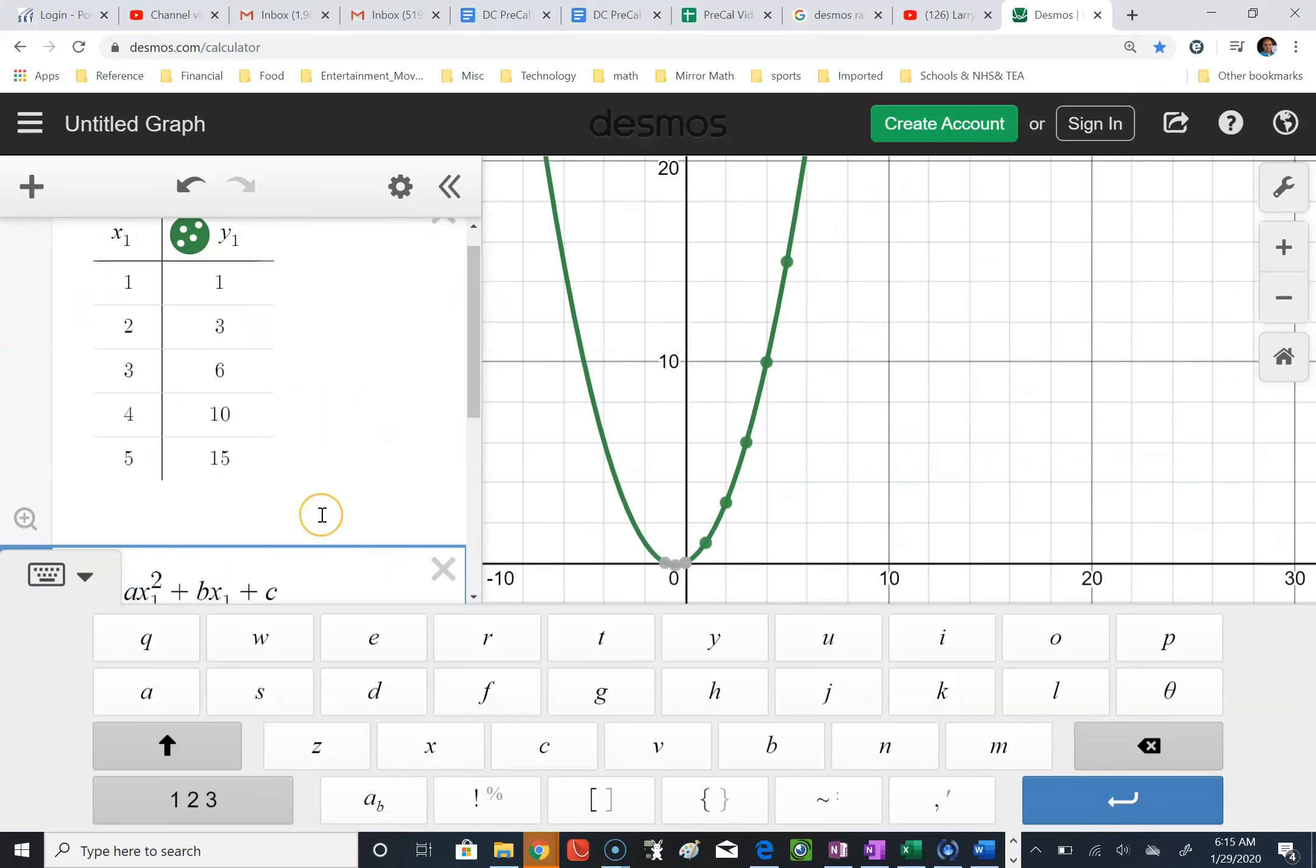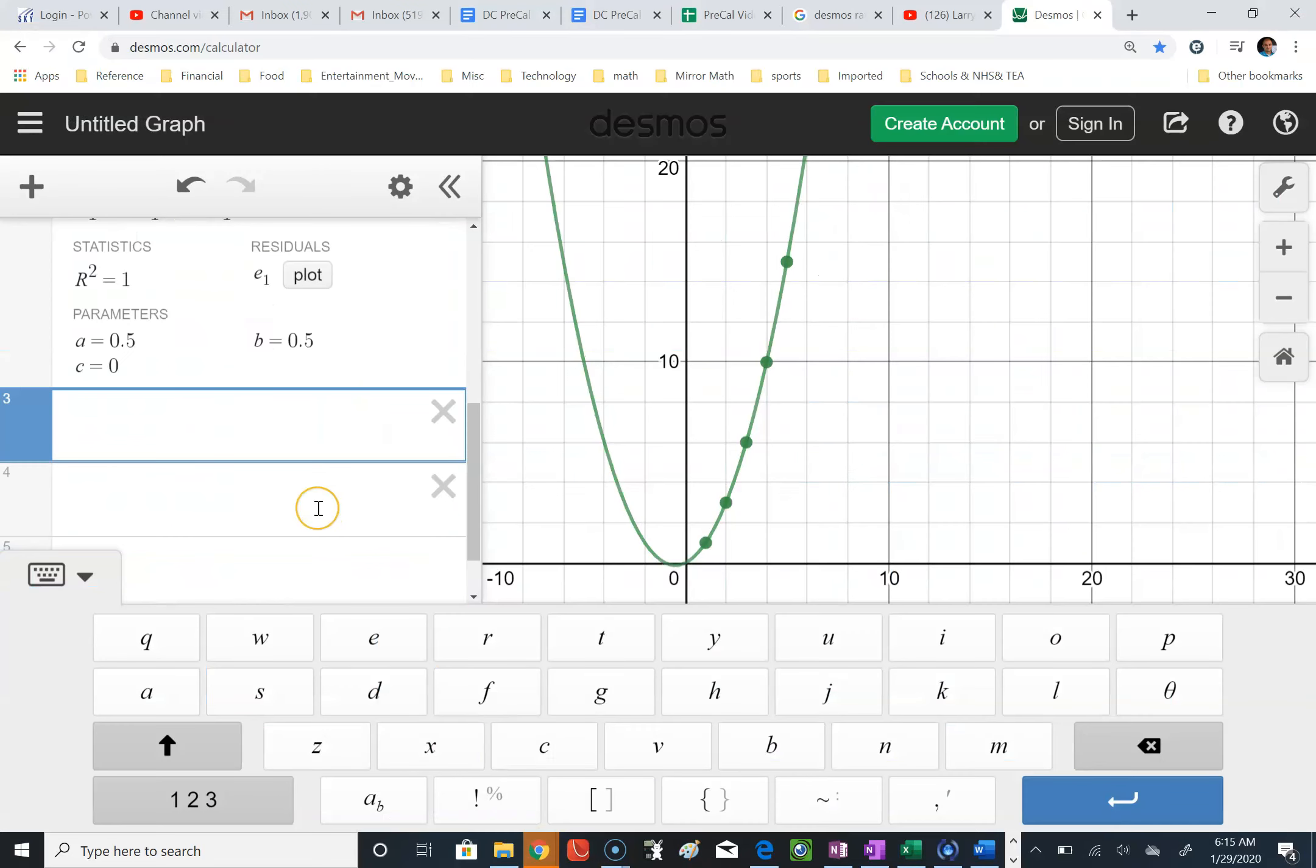Desmos will have it cranked out for you right here. A is 0.5, so it's 1 half x squared plus 1 half x. That's the B parameter, and C is the constant.